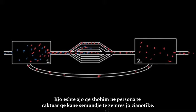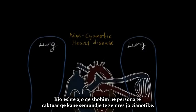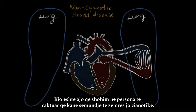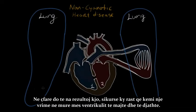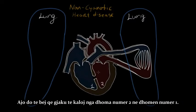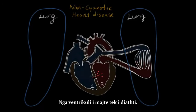That's exactly what we see in certain individuals that have non-cyanotic heart disease. With non-cyanotic heart disease, we're talking about a congenital disorder — congenital just means that individual was born with it. In this case, we have a hole in the wall between the right ventricle and the left, and the result is that blood is gonna flow from room two to room one — from the left to the right ventricle.